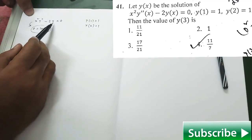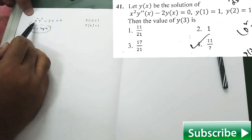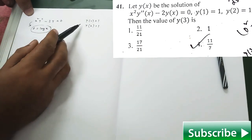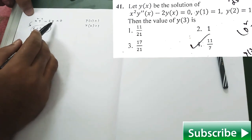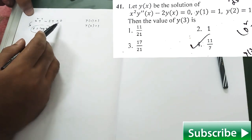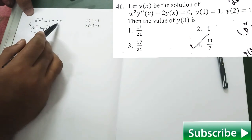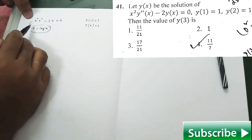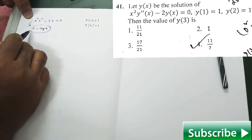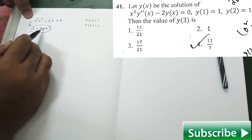This second order linear differential equation with variable coefficients is given to us along with two conditions, and they are asking what is the value of y at x equal to 3. To solve this kind of problem, we use the concept called change of independent variable.